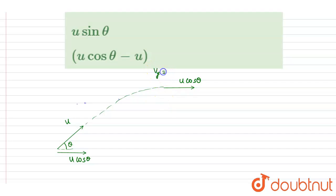So here the horizontal component, that is u cos theta, that will remain unchanged, right? So at the maximum height, the v_y will be equals to 0 and the velocity will be u cos theta directed in this direction.